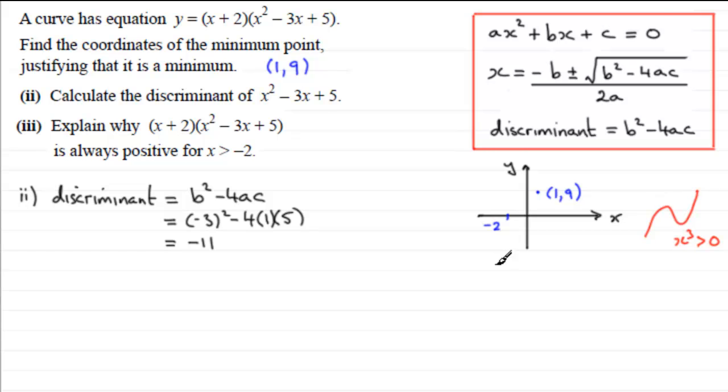It's clearly going to come up like this through here, but where else does it cross the x-axis? Well, when y equals 0, either x plus 2 equals 0, which gives us minus 2, or x squared minus 3x plus 5 would equal 0.